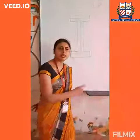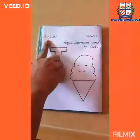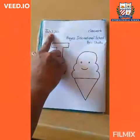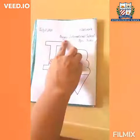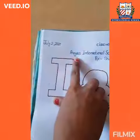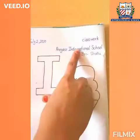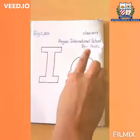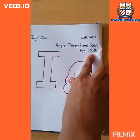Now we will color the letter I and ice cream. What is the date today? July 2, 2020. What is the name of your school? Pryas International School. And which class? PP1. And what is the name of your teacher? Shalu.